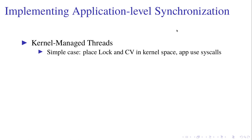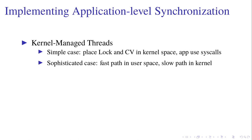Now that we've covered kernel-level synchronization, let's talk about implementing it at the application level. There are two ways to implement thread libraries at the application level. One is kernel managed threads: we can place all the locks and condition variables in the kernel space, and the application uses system calls to perform all these operations. For more performance, we can write something similar to the Linux implementation — put the fast path in user space using just two instructions to lock or unlock, but handle the slow path in the kernel when a lock is already taken.